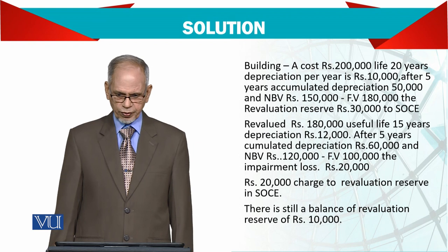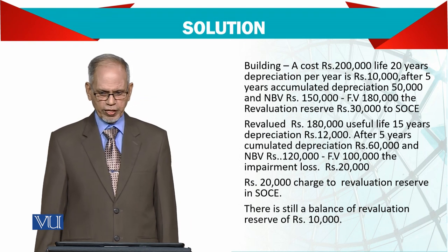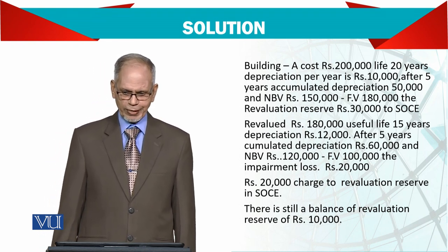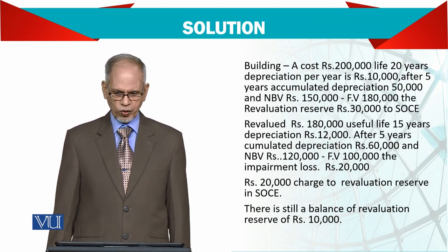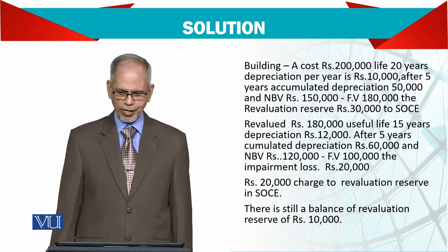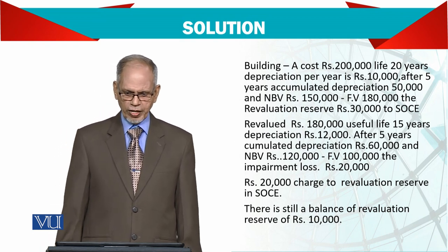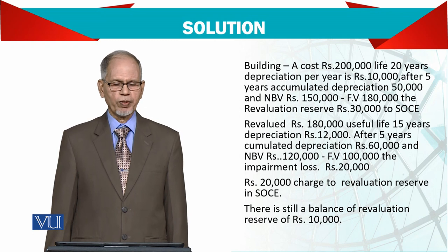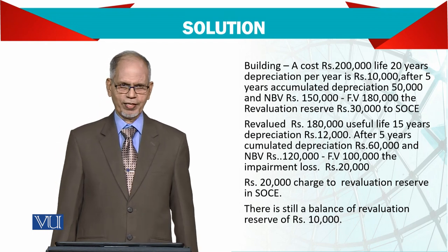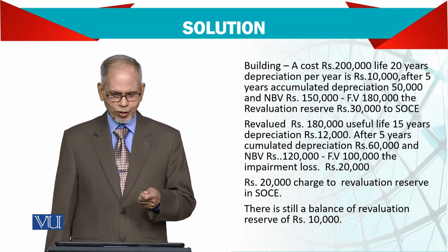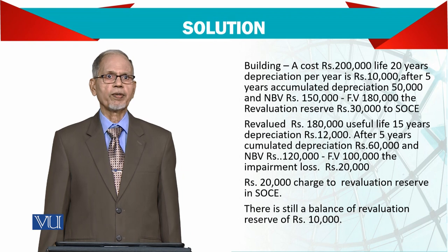For Building B, cost is 180,000 with a life of 15 years, so depreciation is 12,000 per year. Over five years that is 60,000, leaving a net book value of 120,000. The fair value is 100,000, giving an impairment loss of 20,000. This 20,000 is charged to the revaluation reserve in the statement of changes in equity. Since 30,000 was originally credited there and we are taking out 20,000, the remaining 10,000 stays in the revaluation reserve under other comprehensive income.